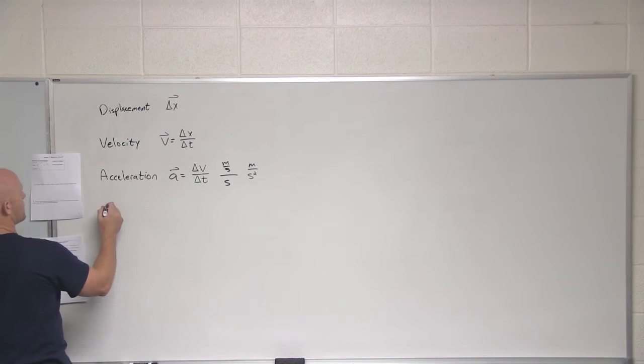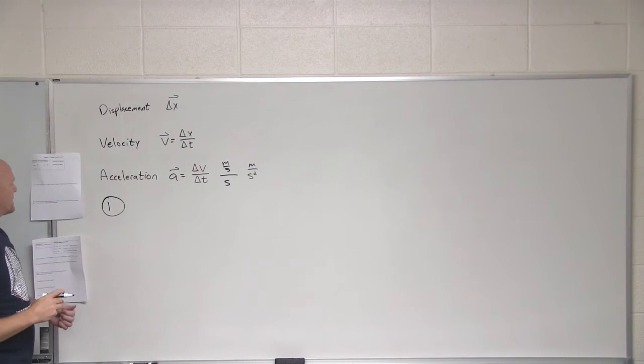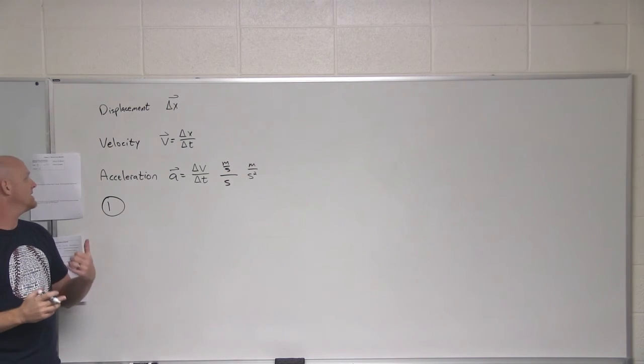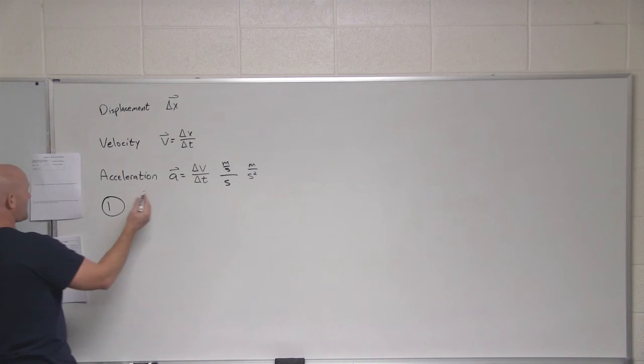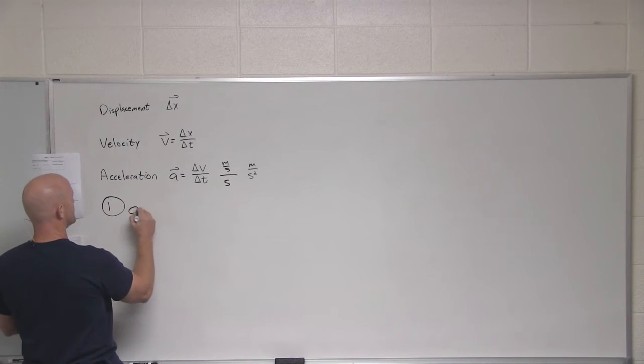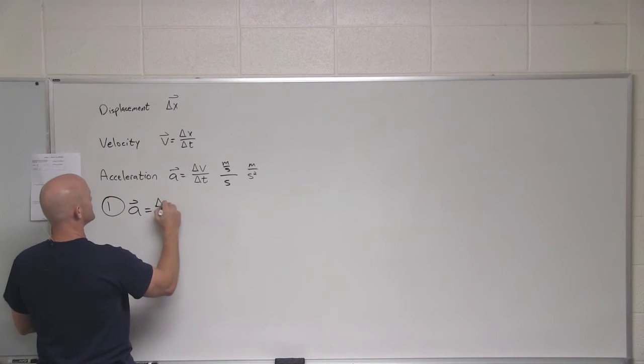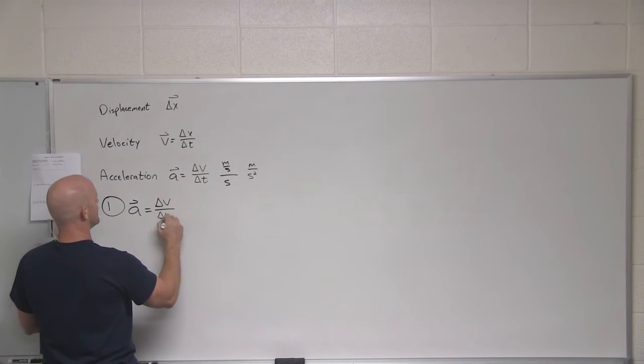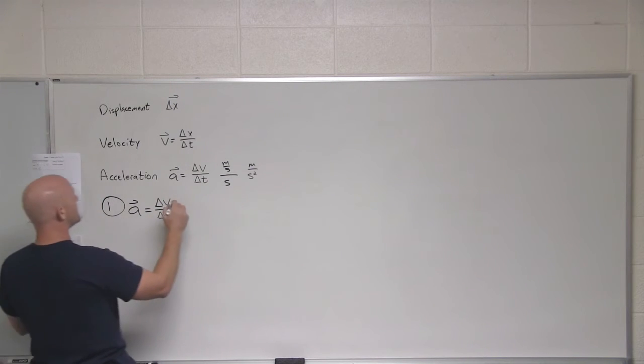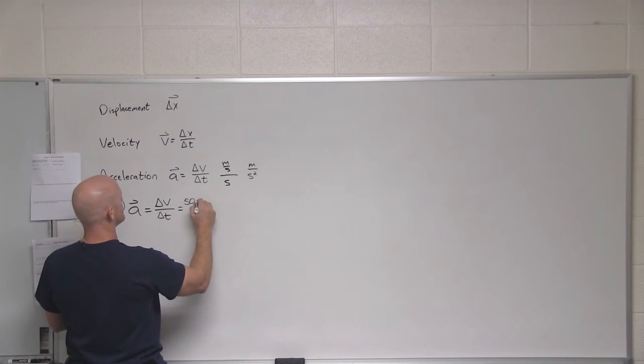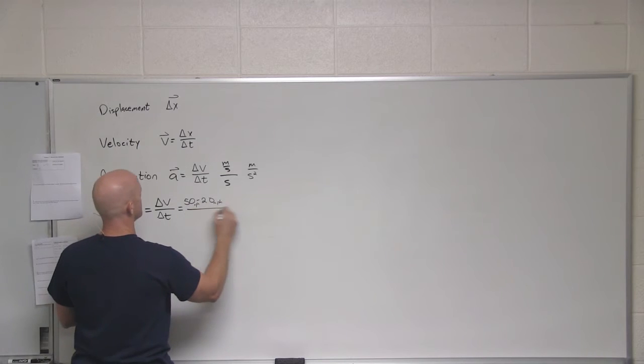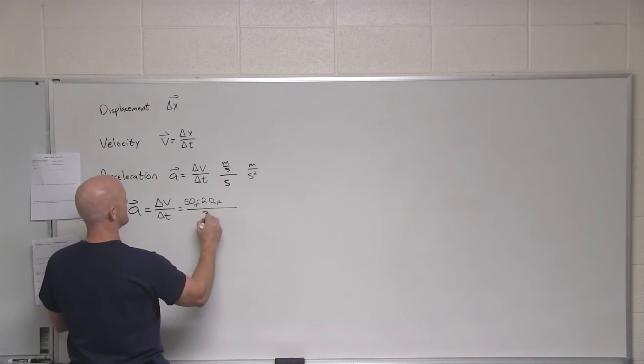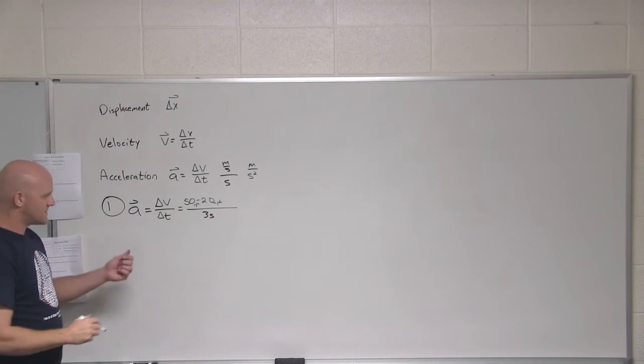Let's start with number one. A car accelerates uniformly from 20 miles per hour to 50 miles per hour in three seconds. What is the magnitude of its acceleration during this time? It's simply just the definition of acceleration. Acceleration equals change in velocity over change in time. Your change of velocity is always final minus initial. So that's 50 minus 20, and that's in miles per hour, all over a time of three seconds.